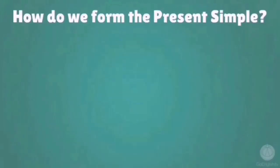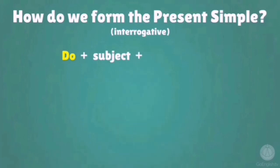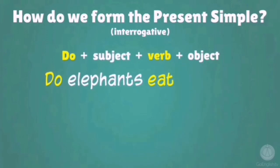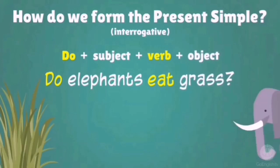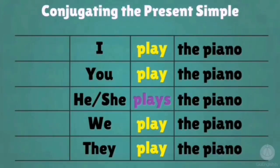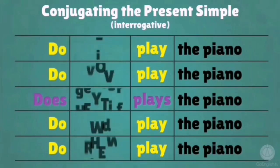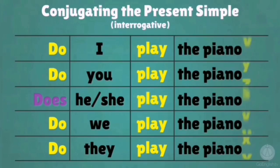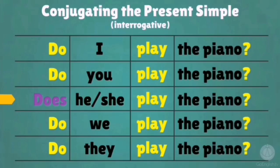How do we form the present simple — interrogative? Do/Does + subject + verb + object. For example: 'Do elephants eat grass?' Conjugating: Do I play the piano? Do you play the piano? Does he play the piano? Does she play the piano? Do we play the piano? Do they play the piano?